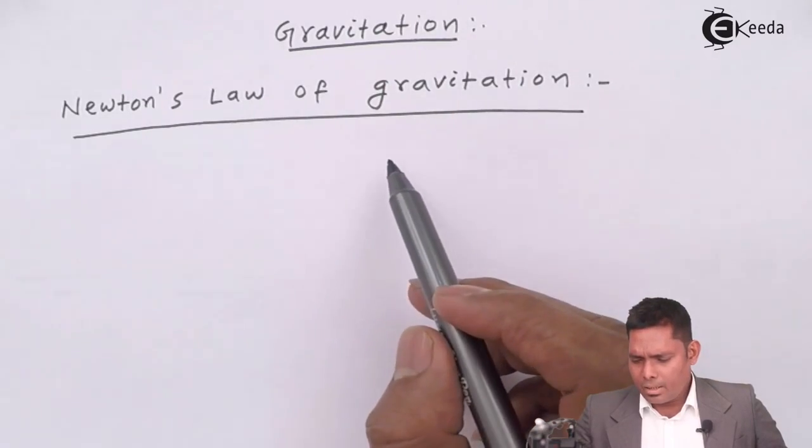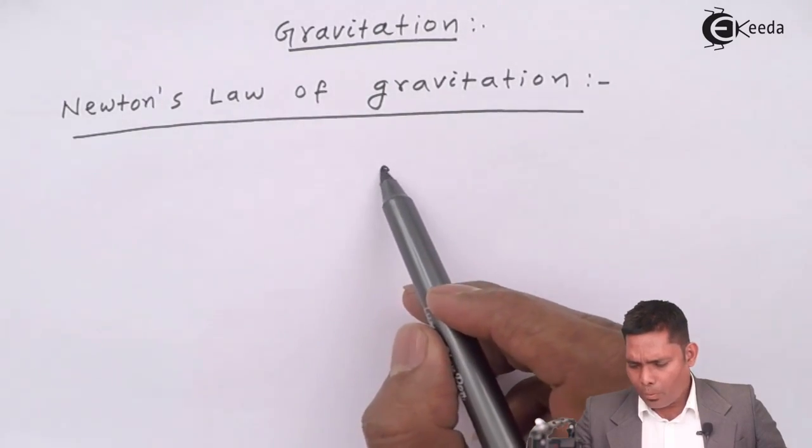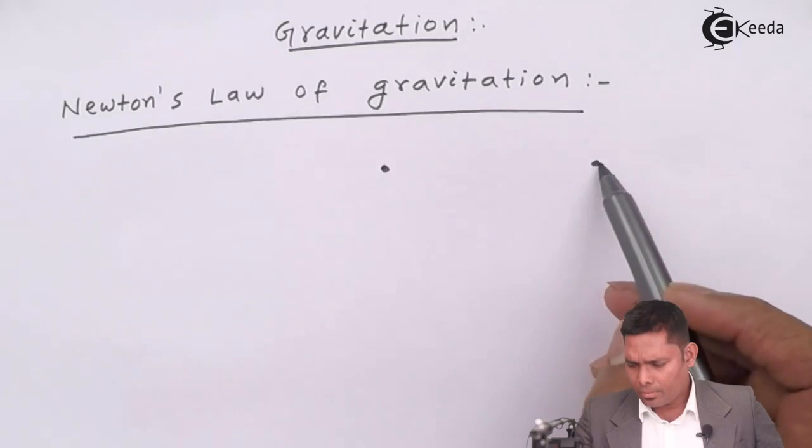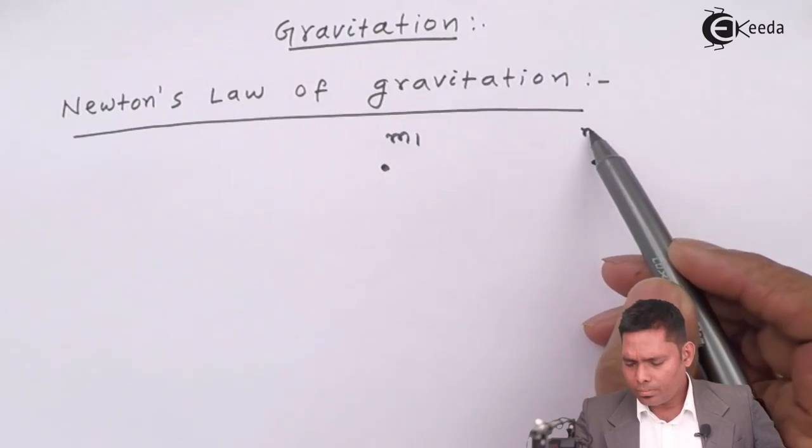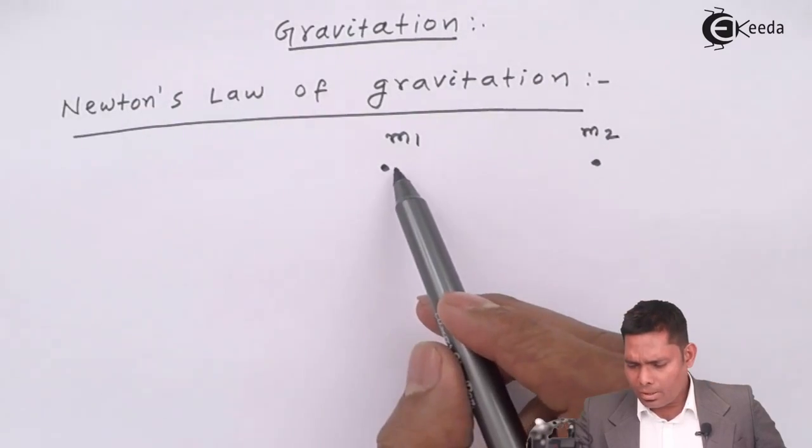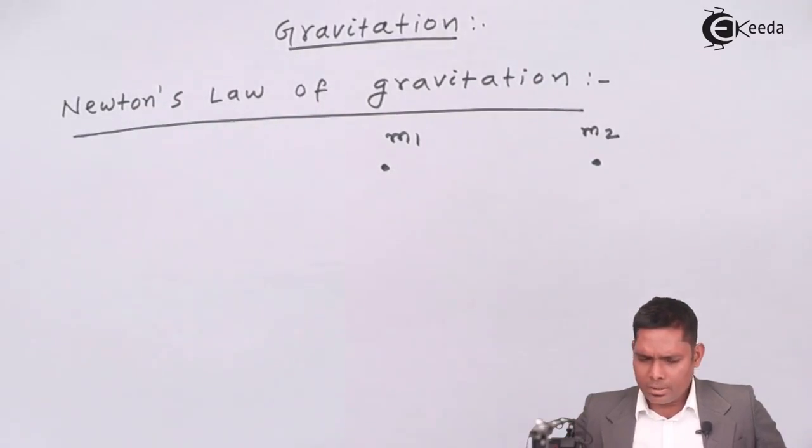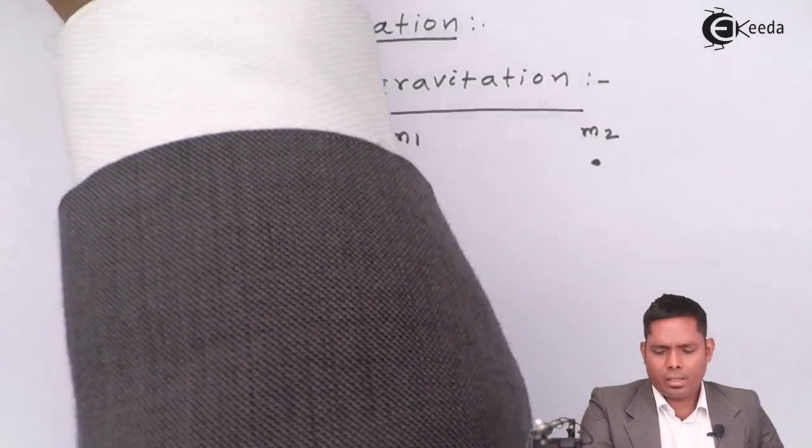This law states that if I have two point masses, say M1 and M2, and suppose that these two point masses are separated by a distance, say D.